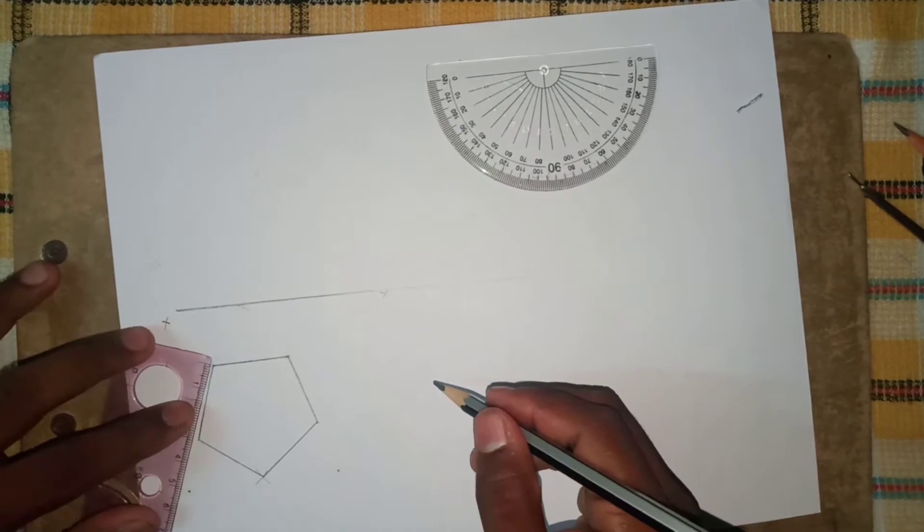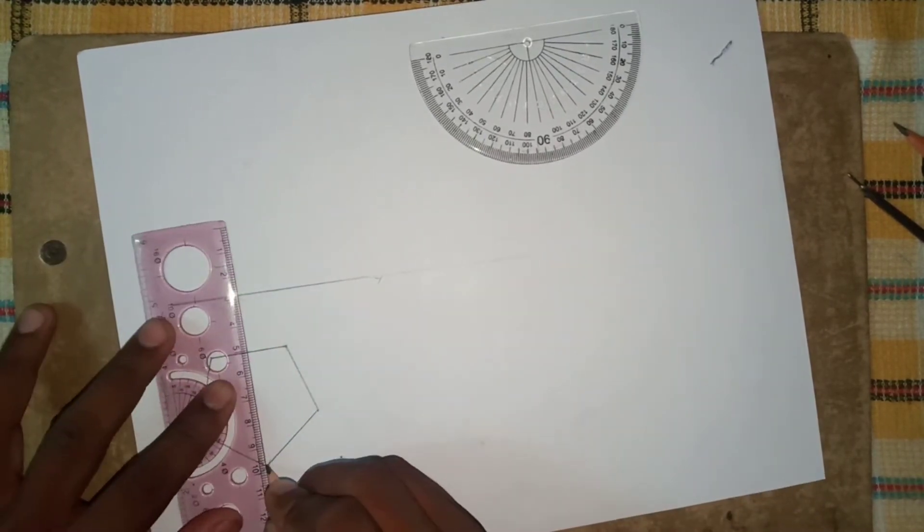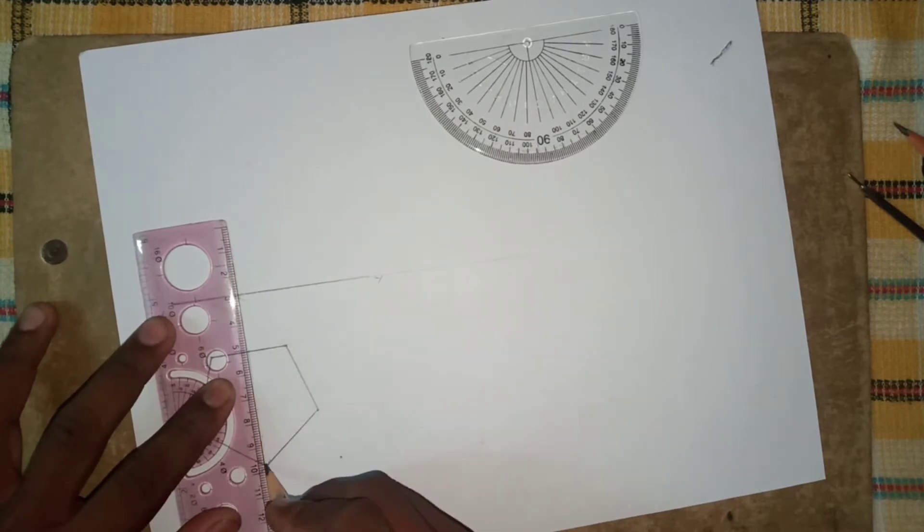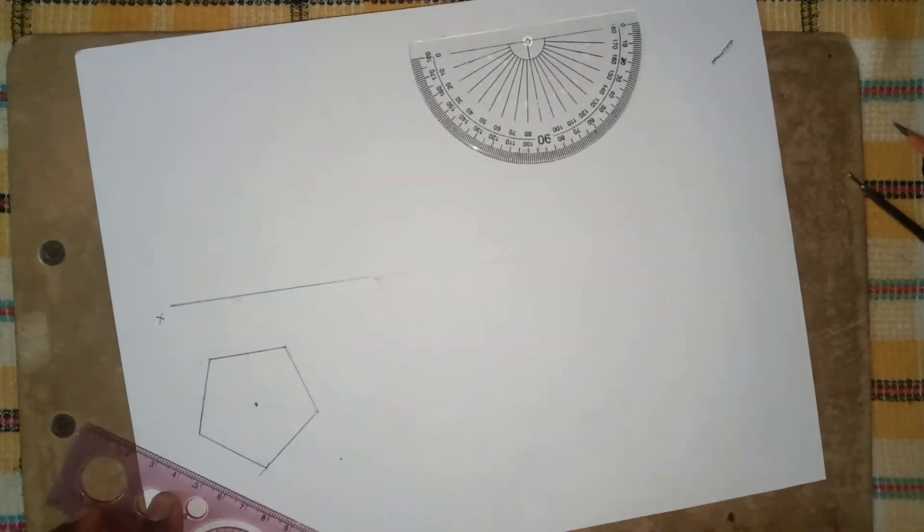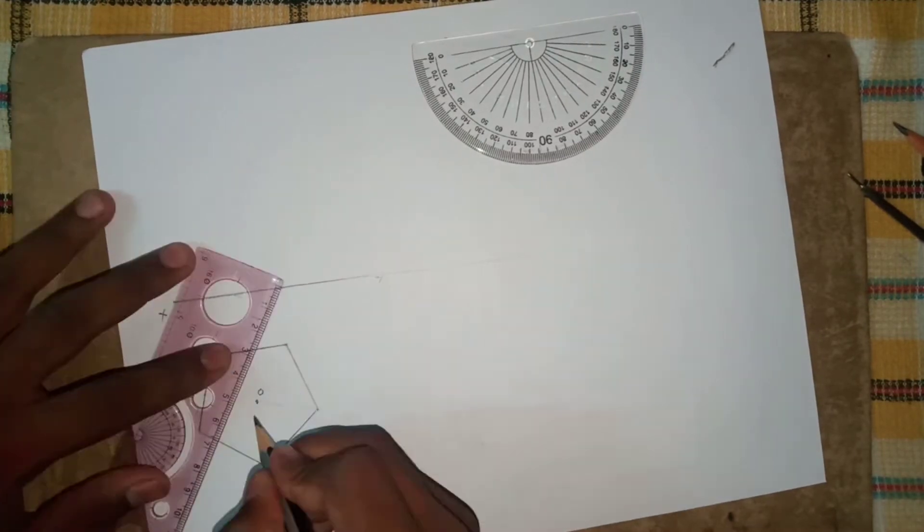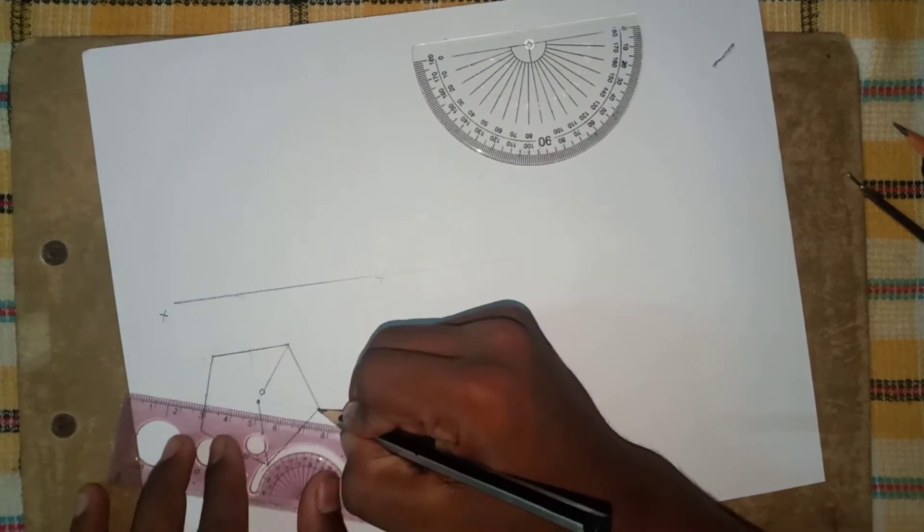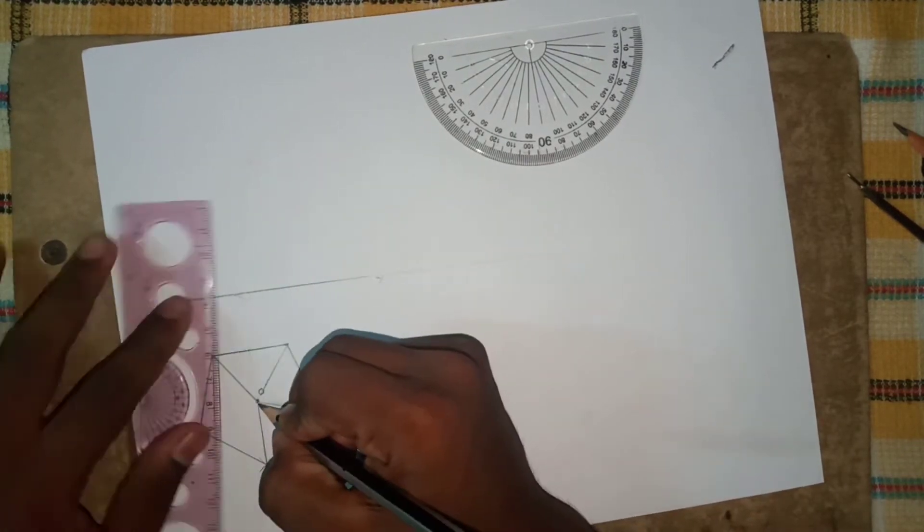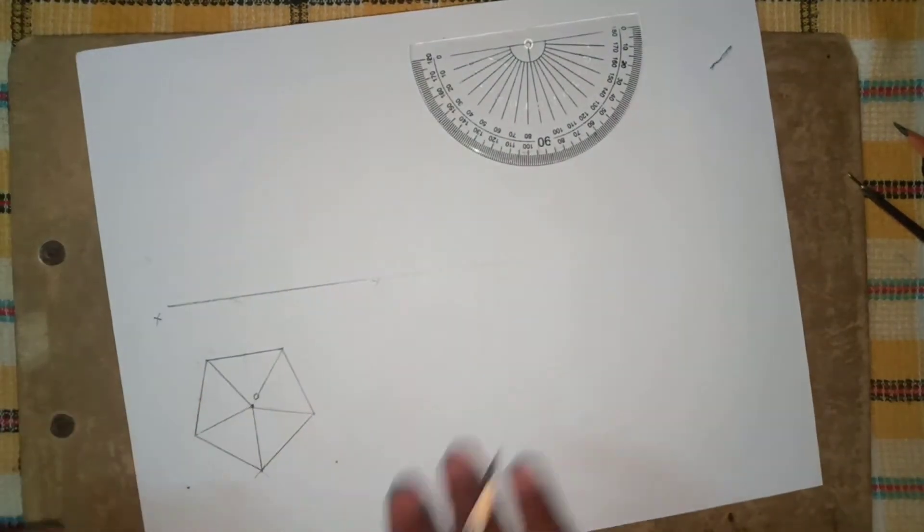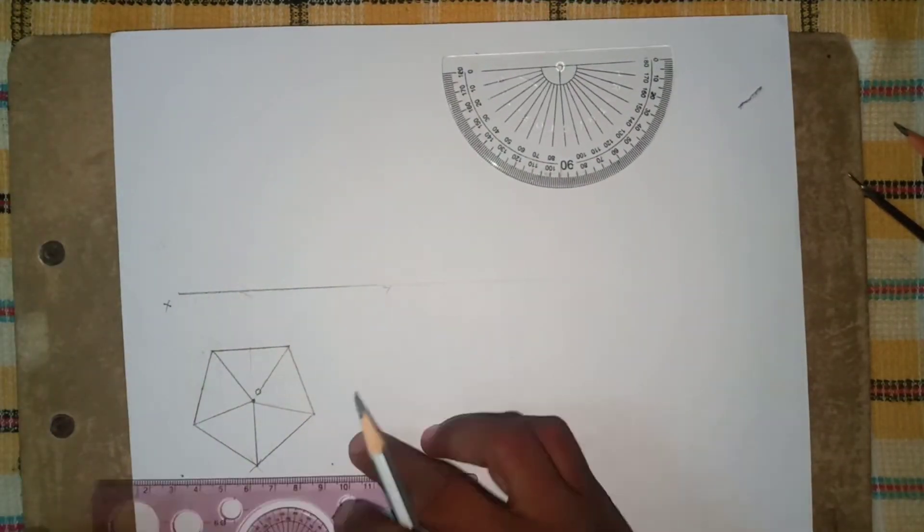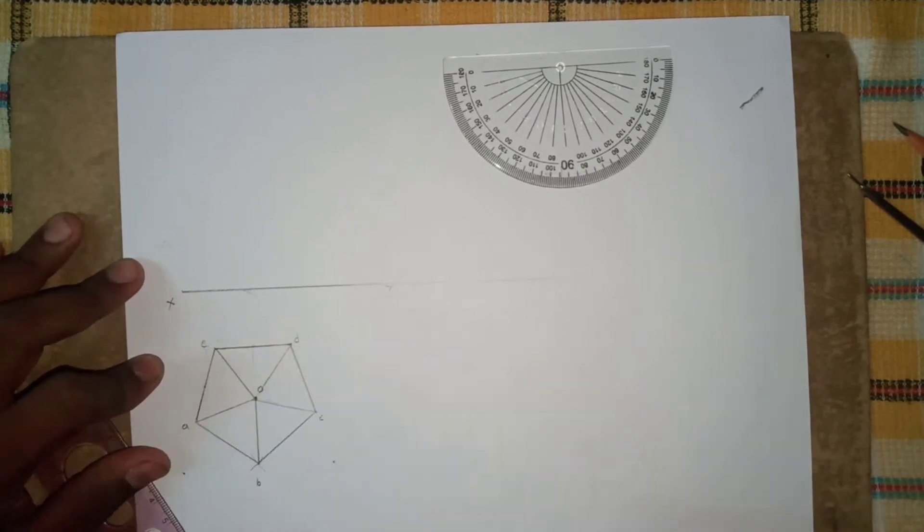Now take the center point and draw opposite angle like this by constructing center point of the pentagon pyramid. This is the O, this is the center point. Let us join both points with O. Let us give in the notation A, B, C, D, E.